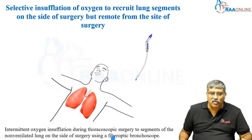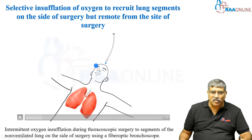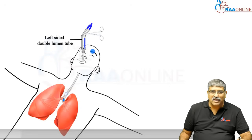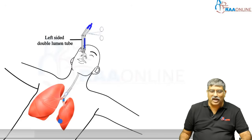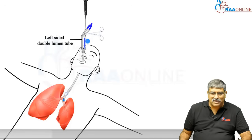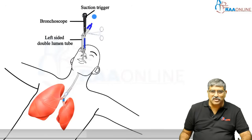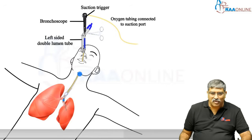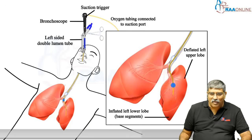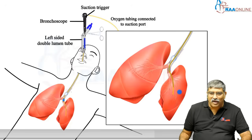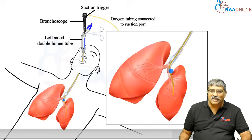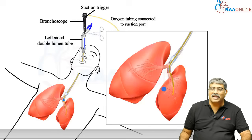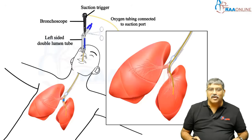Here you can see the double lumen tube going into the left side. The left side is occluded and the left side is collapsed. A fiber optic bronchoscope is passed. The suction port is connected and here you can see it is connected to the lower lobe — oxygen goes into the left lower lobe, the left lower lobe alone is inflated, and the upper lobe is not seen. This can be seen on the screen and the surgeon can decide whether it is over-inflated or not, which is very important for maintaining oxygenation.